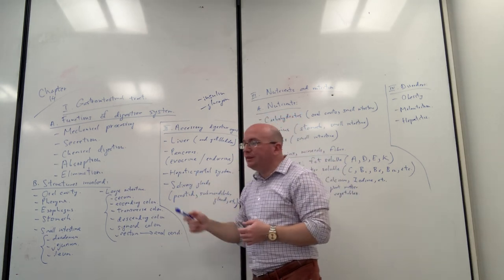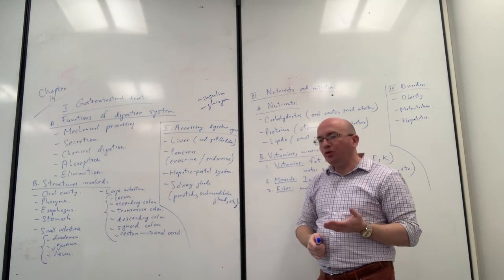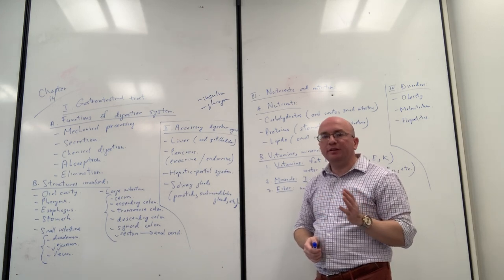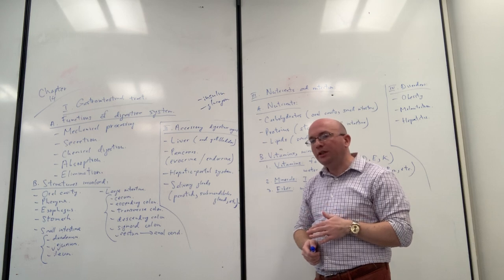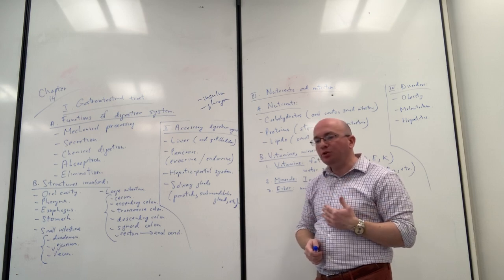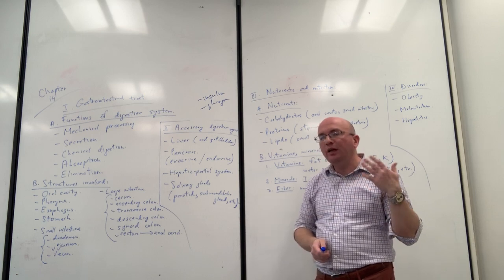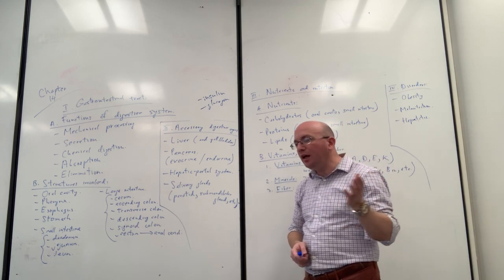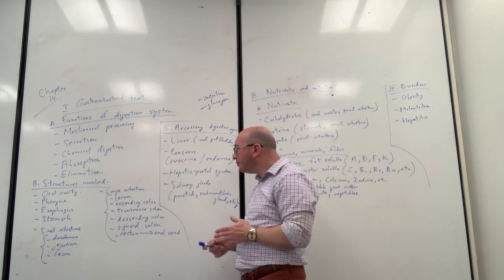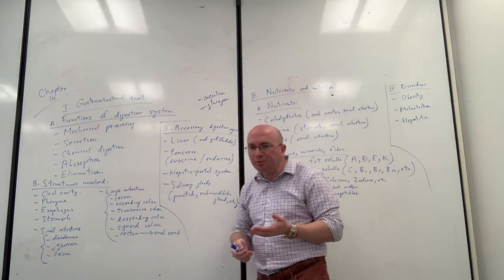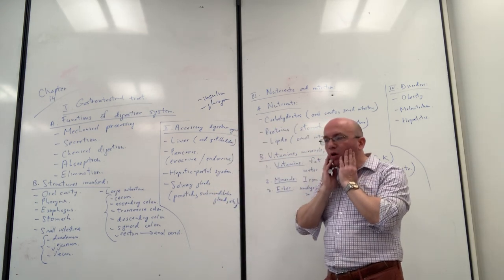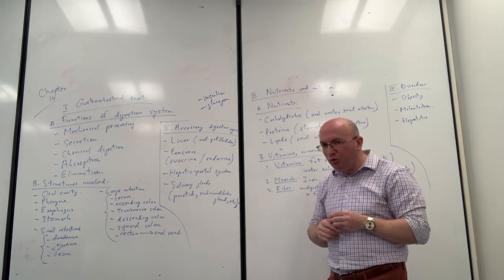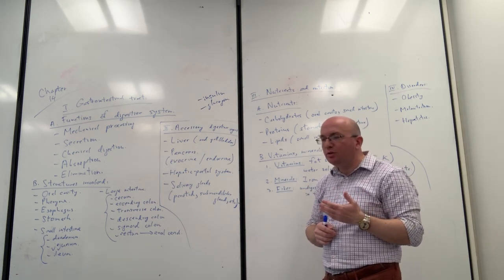The hepatic portal system, as already explained, involves blood being drained through the venous system from the digestive system. As molecules are absorbed, they go to the liver first for processing by the hepatocytes and then continue to the rest of the body. The salivary glands produce saliva in the oral cavity to help moisten the food and start breaking down starches and sugars.